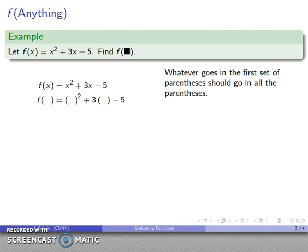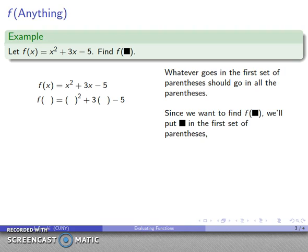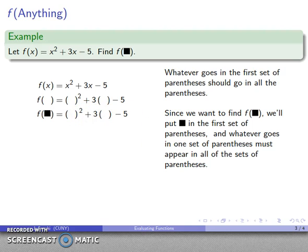And the key here is that whatever I put in the first set of parentheses needs to go in all the sets of parentheses. So what do I want? Well, I want f of black square, so black square should go into the first set of parentheses there. And if it's in the first set of parentheses, it should be in all the sets of parentheses. So I'll put it in here, and I'll put it in the last one, and there's my f of black square.